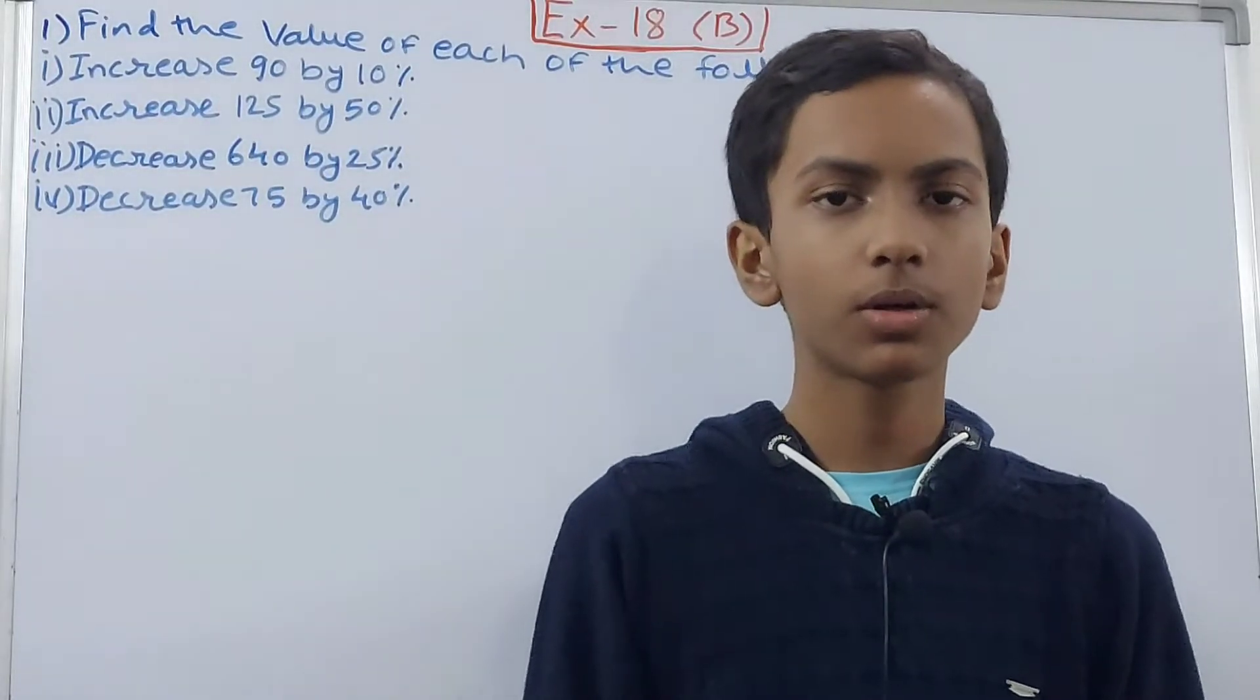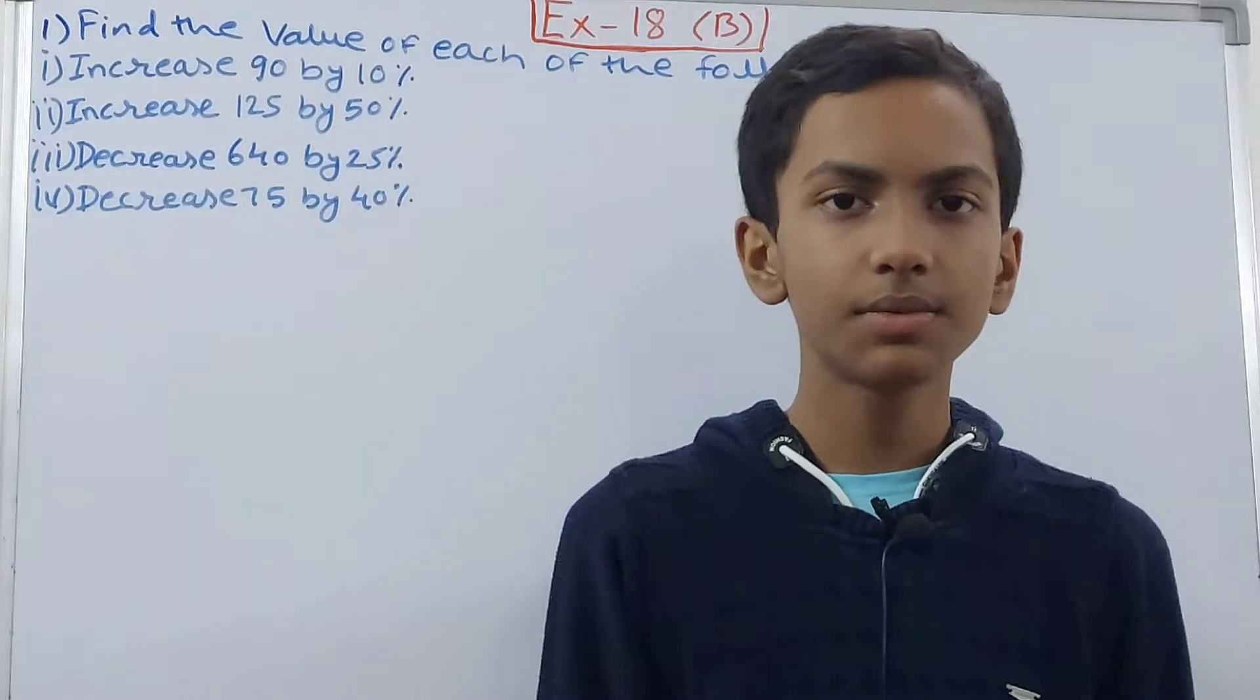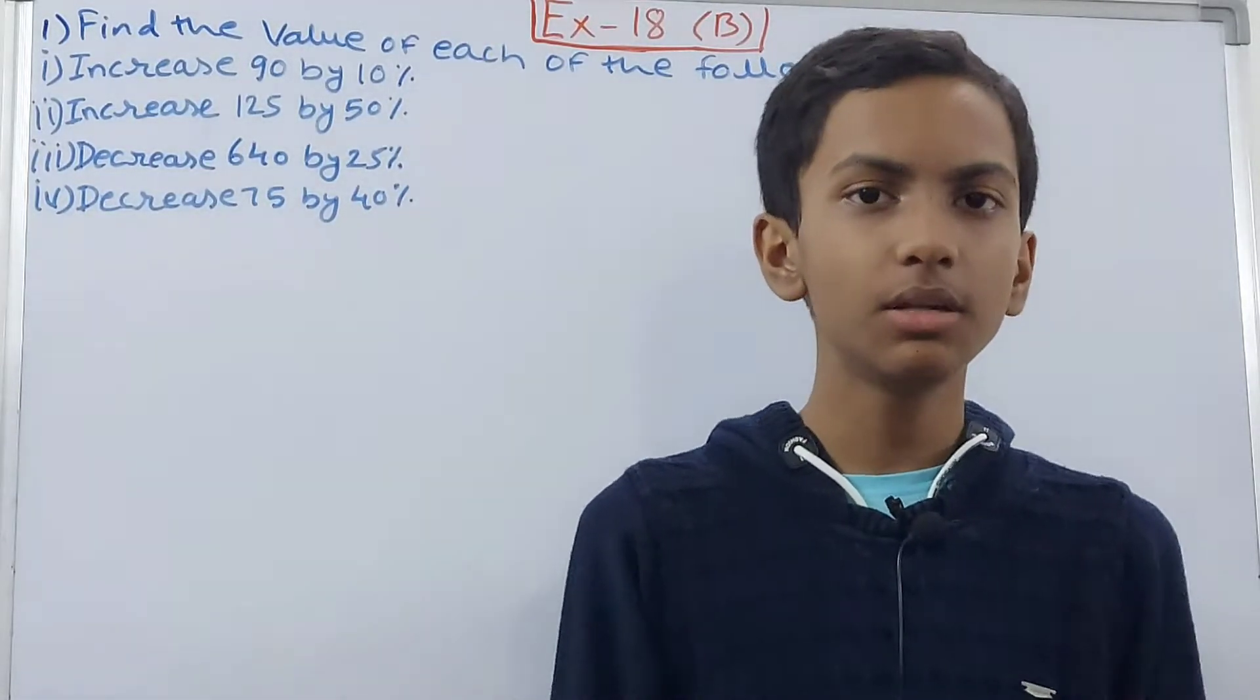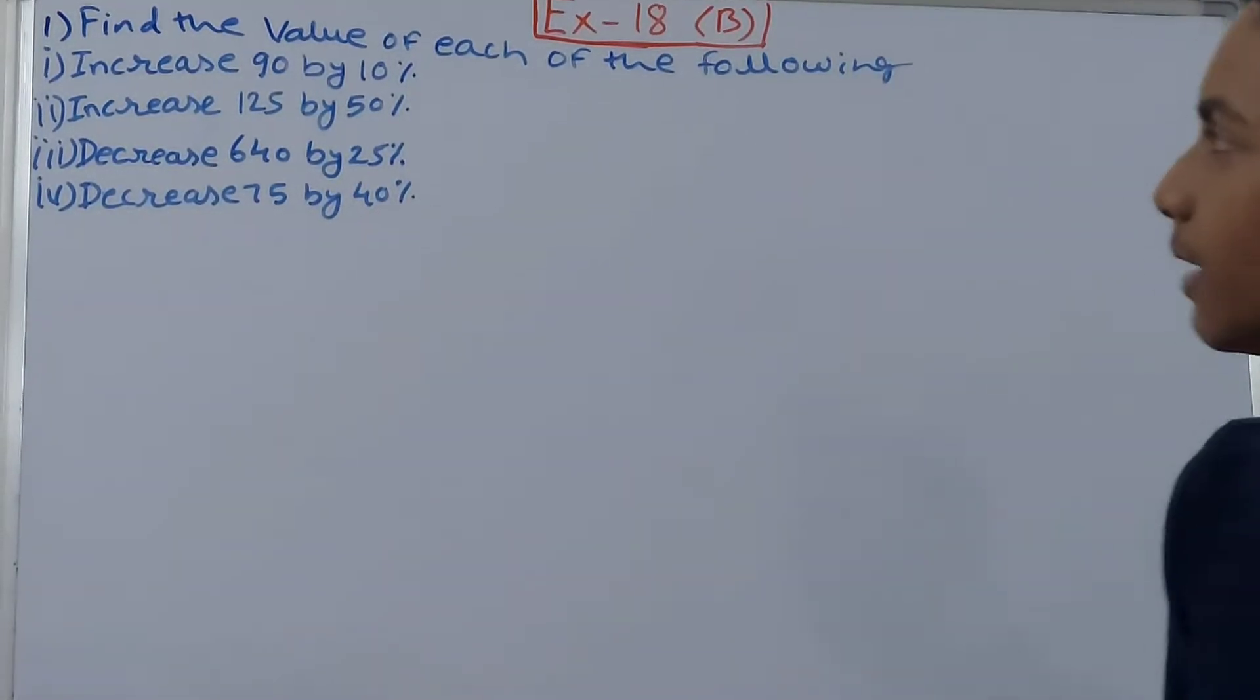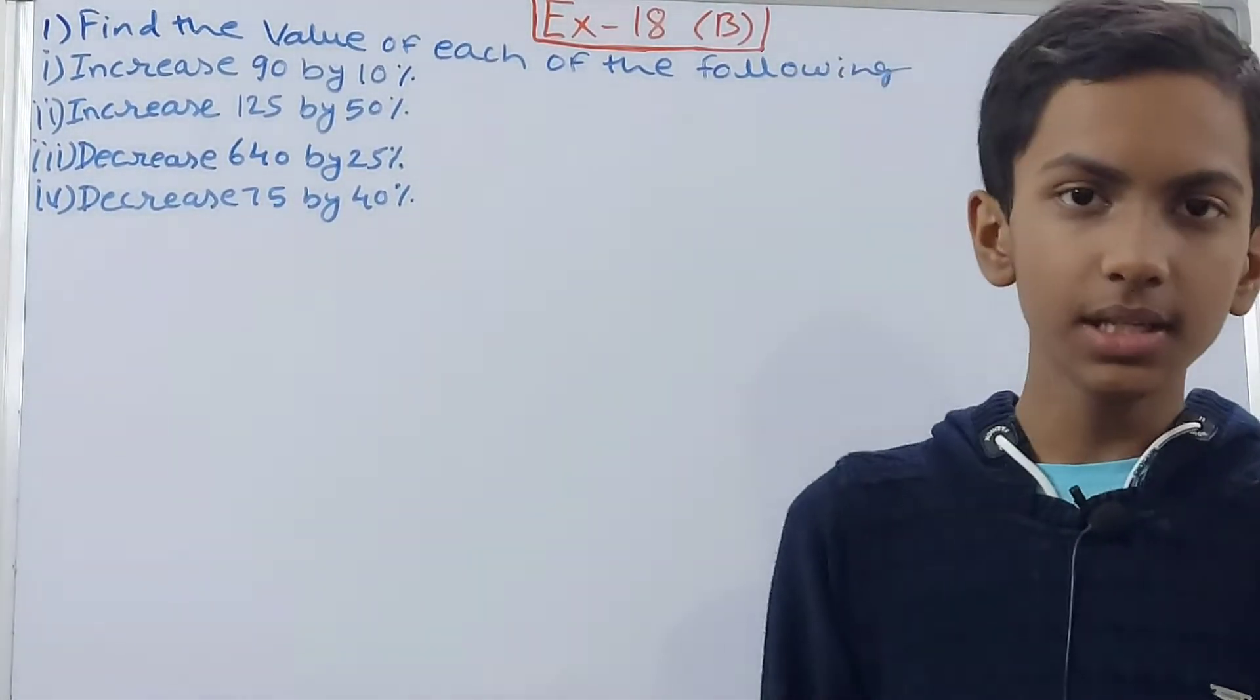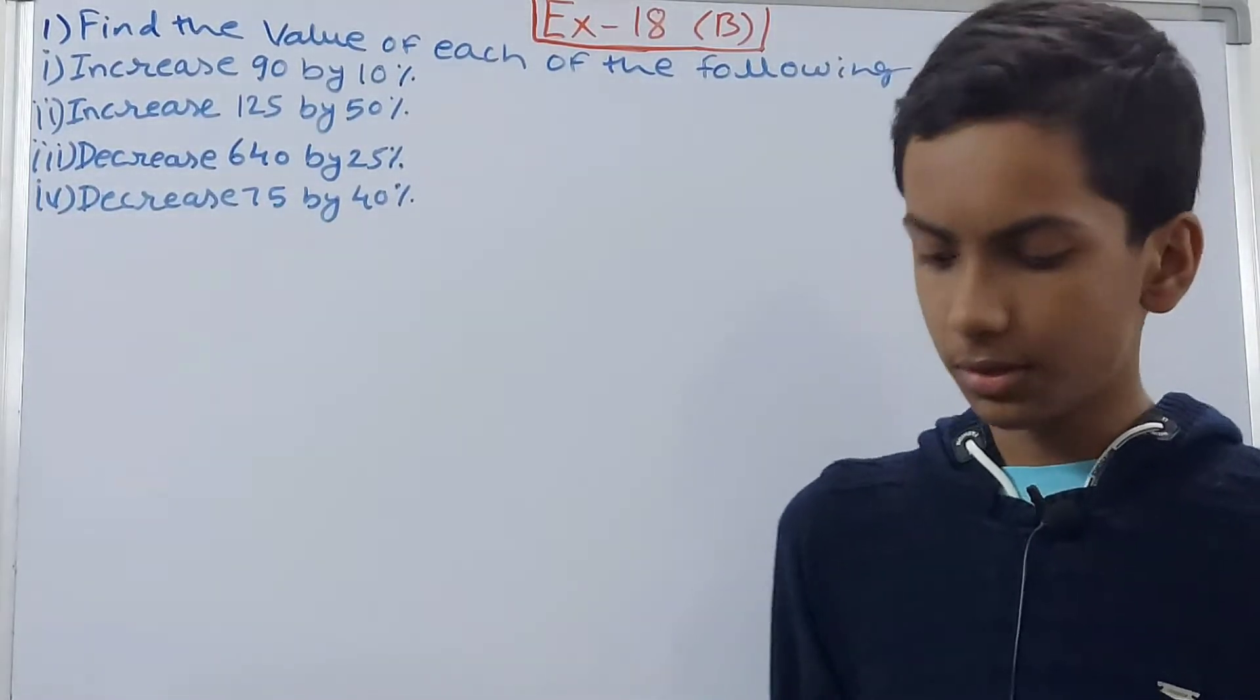Welcome back to my YouTube channel, Unlock Your Learning. In this video we are going to solve ICSE Mathematics Class 7, Chapter 18, Percentage and Its Applications, Exercise 18D, Question 1. This one is find the value of each of the following. First we have increase 90 by 10%. So what we have to do is that 90 is the number given to us, we have to increase this 90 by 10% of that 90.